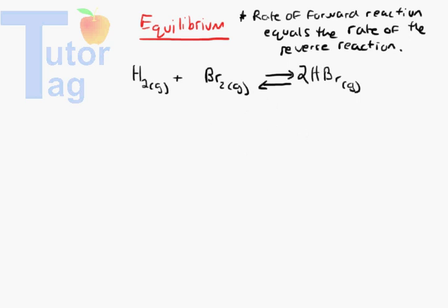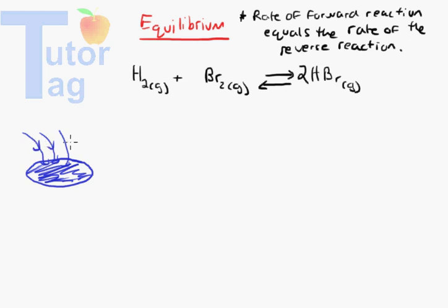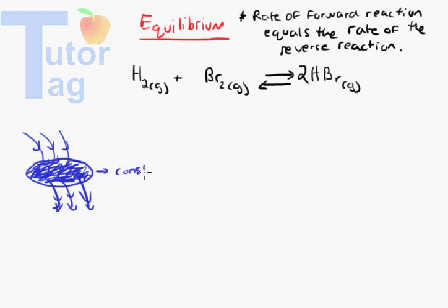You can imagine equilibrium like a waterfall. If we had a pool of water, and imagine a waterfall flowing into that pool — that's the rate of incoming water. There's also another waterfall pouring out. If the rate of incoming water is the same as the rate of outgoing water, then the water level is not going to change. It's going to be constant.